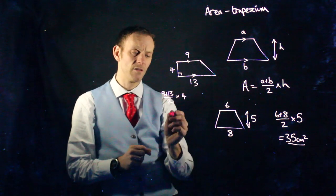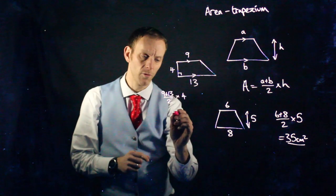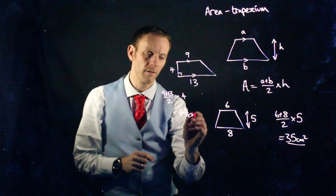9 plus 13 is 22. 22 divided by 2 is 11. 11 times 4 is 44 centimeters squared.